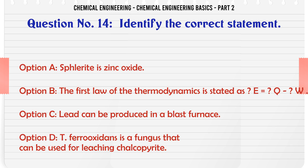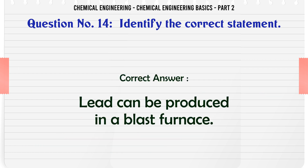Identify the correct statement: a) rust is zinc oxide, b) the first law of thermodynamics is stated as E=QW, c) lead can be produced in a blast furnace, d) Thiobacillus ferrooxidans is a fungus that can be used for leaching chalcopyrite. The correct answer is: lead can be produced in a blast furnace.